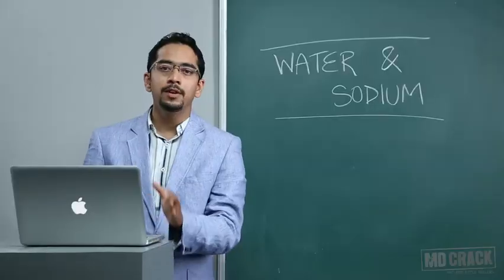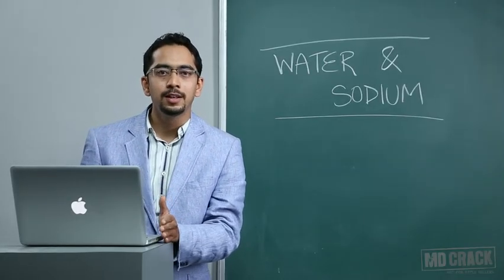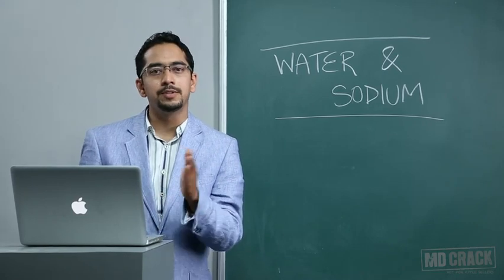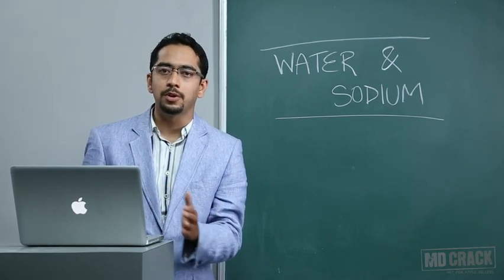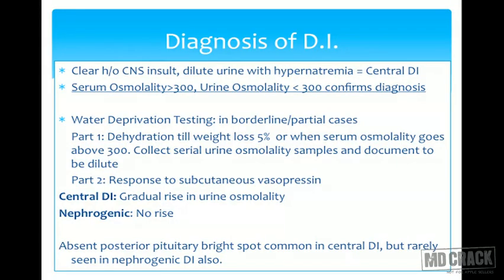Once we've diagnosed diabetes insipidus, we should differentiate between central versus nephrogenic. We give vasopressin and see the response. In central diabetes insipidus, there's gradual rise in urinary osmolality because the exogenous vasopressin we've given subcutaneously is now acting on kidneys, achieving urine concentration. But in nephrogenic diabetes insipidus, this response is not seen.